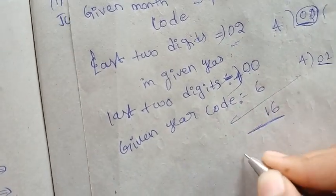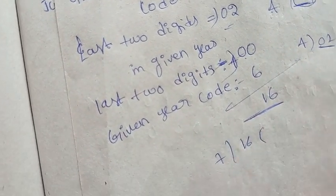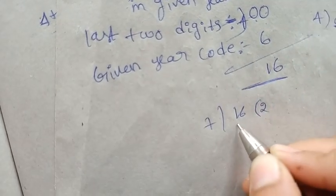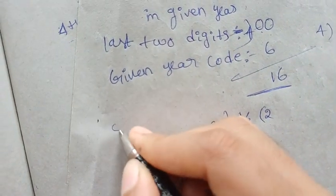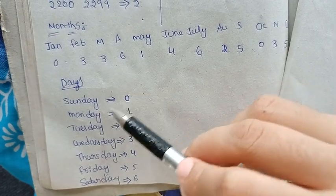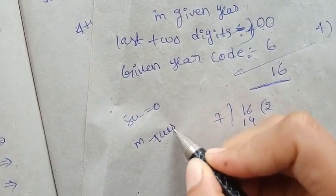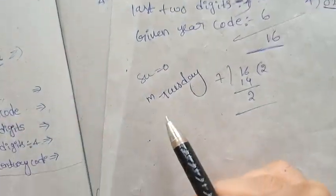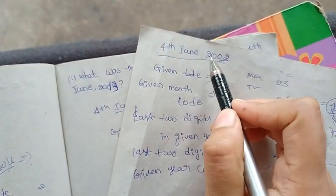Now divide 16 by 7. We get remainder 2. The day code mapping is: Sunday=0, Monday=1, Tuesday=2, Wednesday=3, Thursday=4, Friday=5, Saturday=6. Remainder 2 means Tuesday. So June 4th, 2002 was a Tuesday.